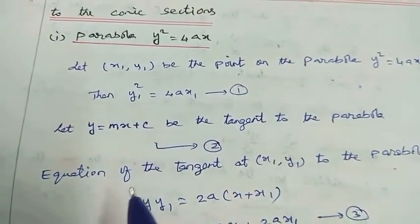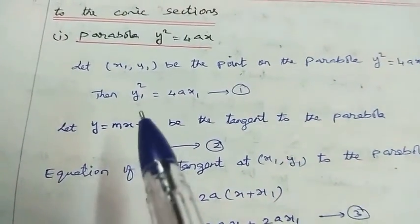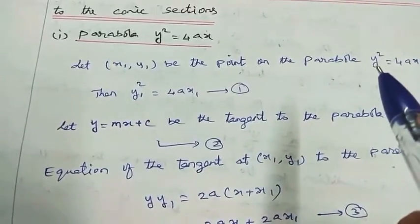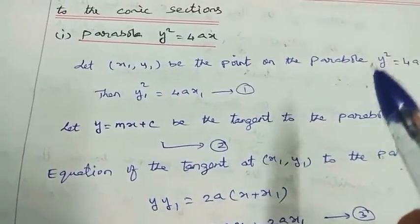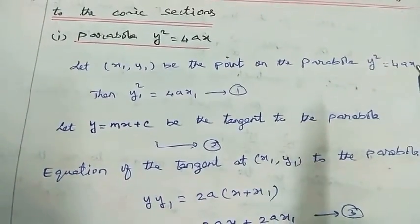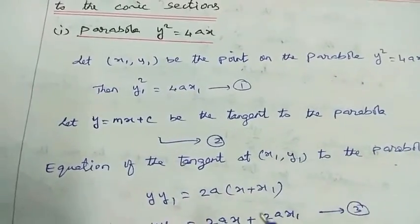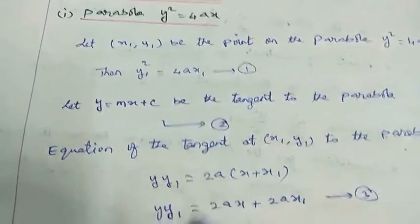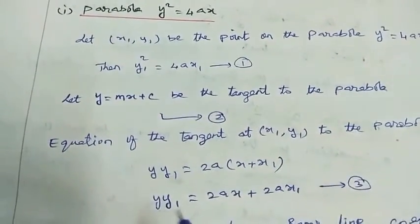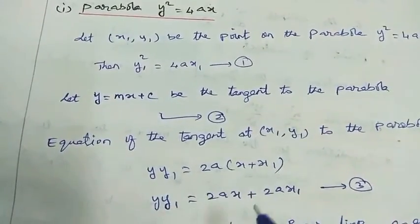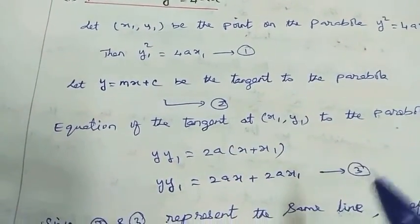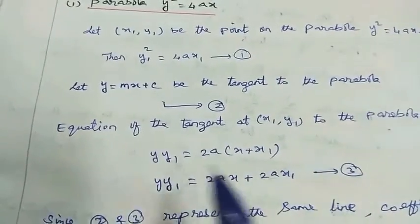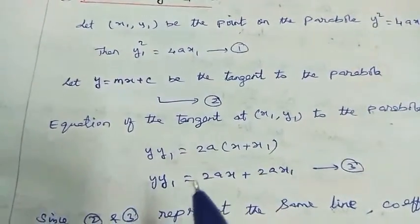In the formula, y square is replaced by yy1, and x is replaced by x plus x1 divided by 2. That gives yy1 equal to 2ax plus 2ax1, which is equation number 3. And y equal to mx plus c is the random tangent line.